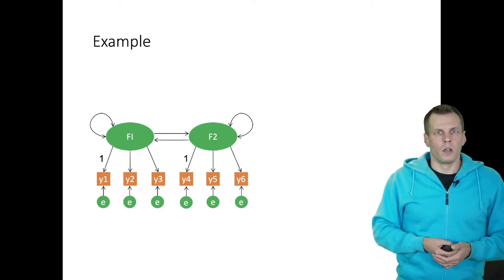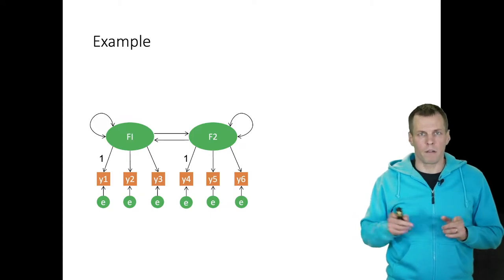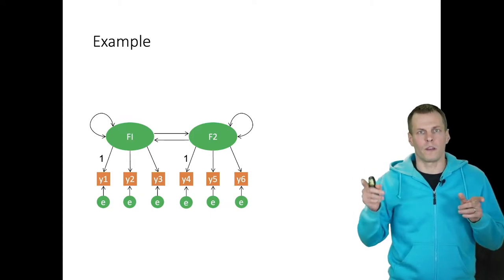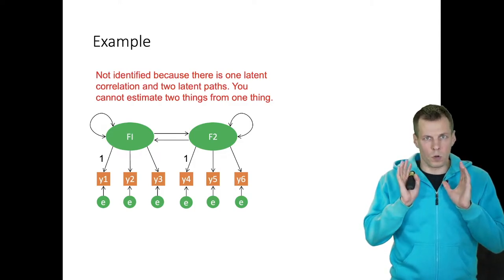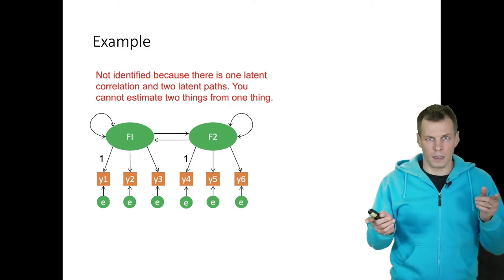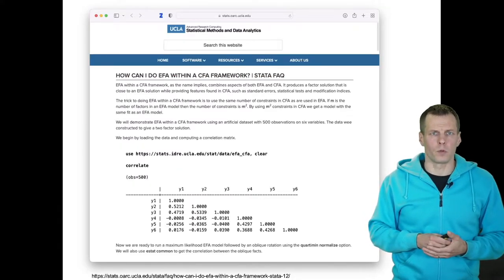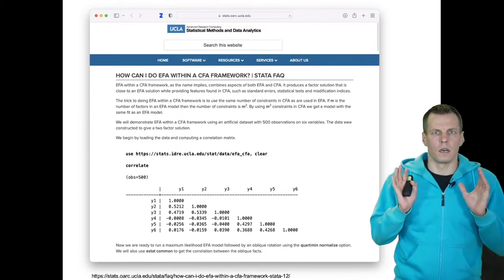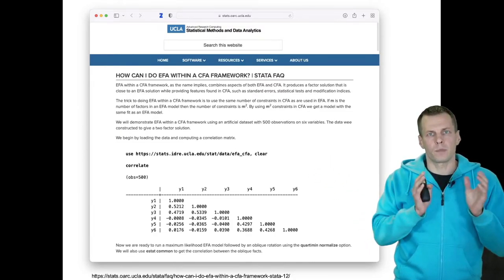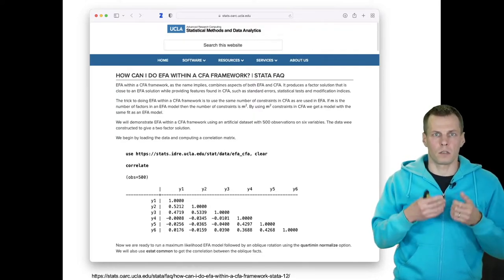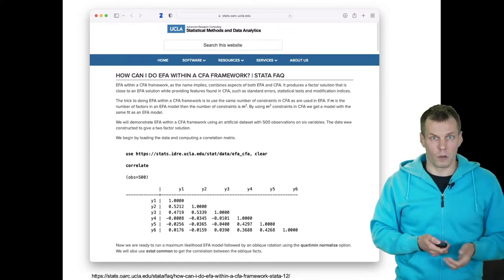So our example model will be this. So we have our two factors F1 and F2, and there is a bidirectional regression path. So we have F1 to F2, F2 to F1. This is not identified because there's only one latent correlation and we can't estimate two directional paths from just one correlation. And our data comes from UCLA. This is a data set, an example of how you can do exploratory factor analysis using confirmatory factor analysis tools. But we'll just be using it to estimate this confirmatory factor analysis model.